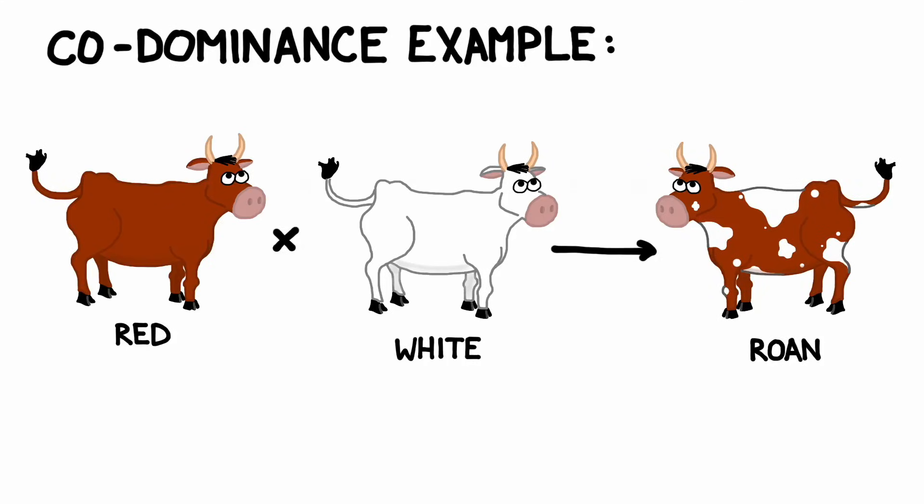Let's check out a couple of real-life examples of co-dominance and incomplete dominance. Some animals, such as cows, show a pattern of co-dominance in their coat coloring. If a red cow is bred with a white cow, hybrid offspring will have both red and white patches on their coats in a pattern known as roan. Another example of co-dominance found in humans is blood type.